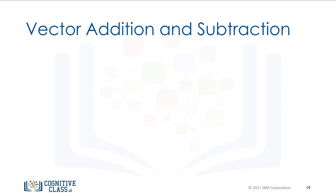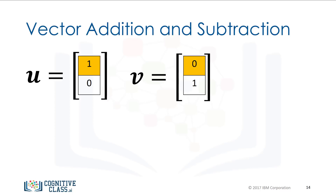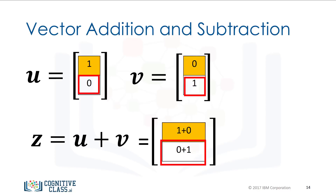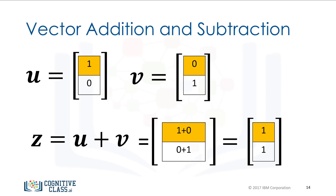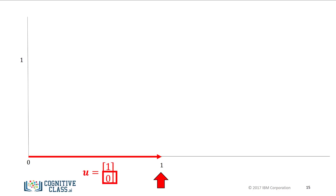Vector addition is a widely used operation in data science. Consider the vector u with two elements, distinguished by different colors. Similarly, consider the vector v with two components. In vector addition, we create a new vector z. The first component of z is the addition of the first component of vectors u and v. Similarly, the second component is the sum of the second components of u and v, making z a linear combination of u and v. Representing vector addition with arrows is helpful; the first vector is in red, pointing in the direction of its two components, offset one unit from the origin in the horizontal direction.